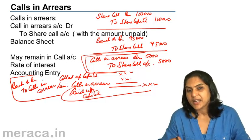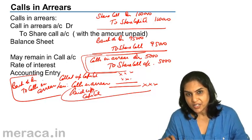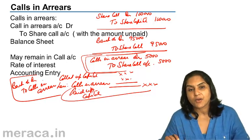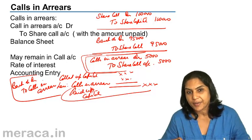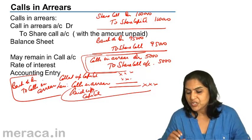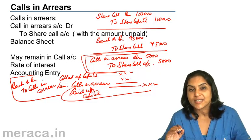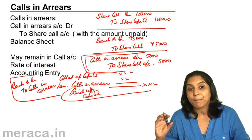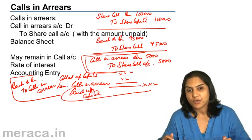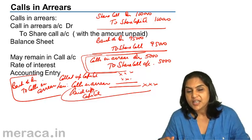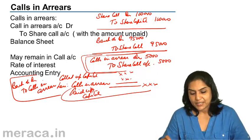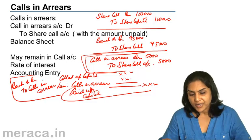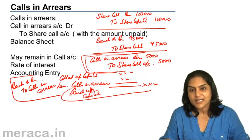The debit balance in any of the call accounts would represent calls in arrears. Alternatively, we can pass an accounting entry to transfer it from the call account to an account called calls in arrears: calls in arrears account debit to the respective call account. This calls in arrears is a debit balance shown as a deduction from share capital, giving us the actual paid-up capital. Called-up less calls in arrears equals paid-up capital. Interest may be charged from the shareholder; the maximum rate as per the Act is 5%.